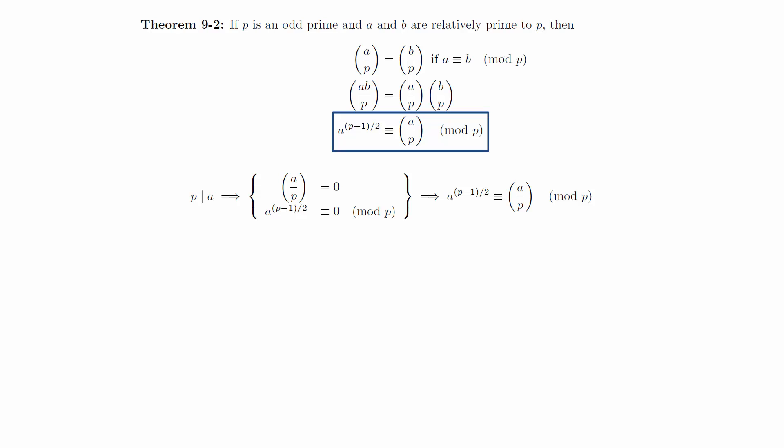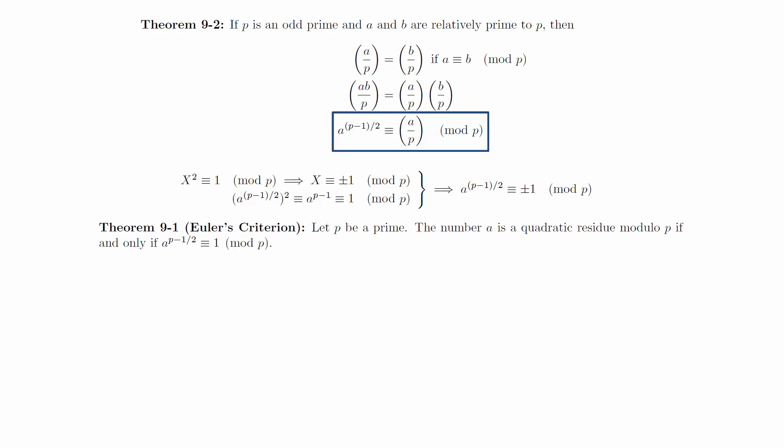If p does not divide a, then we must have a to the p minus 1 over 2 is congruent to plus or minus 1 mod p. We will then use Euler's criterion to investigate the two situations.